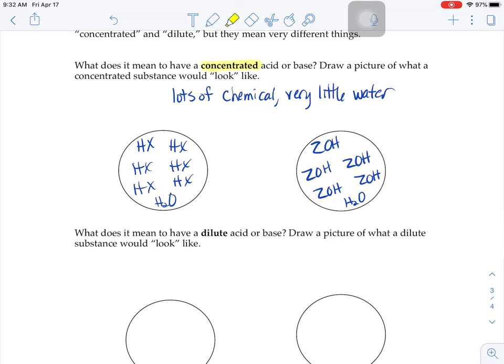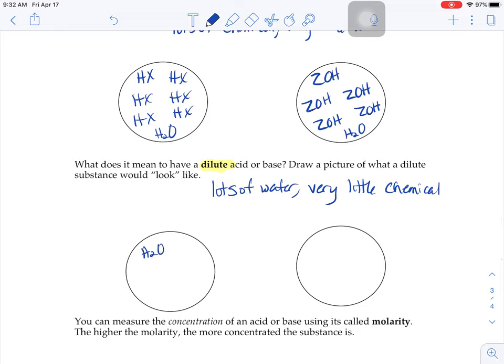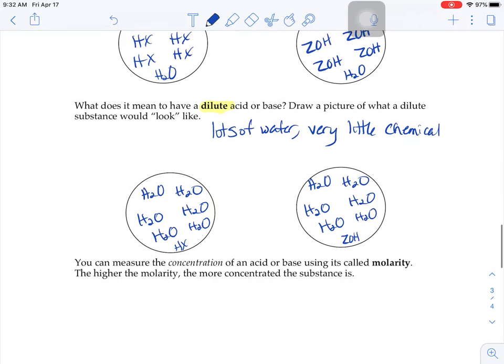If it's dilute, that's the opposite of concentrated. So that means lots of water. Very little chemical. And so it's lots of water. So water, water, water. Load up that beaker full of water. And oh yeah, a little splash of acid in there, HX. Or lots and lots and lots of water again. Tons of water. And then just a little splash of base.